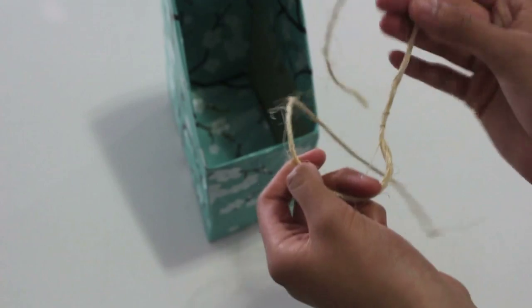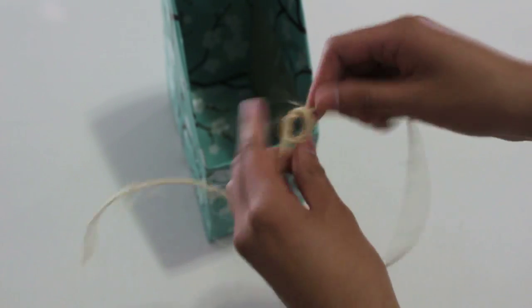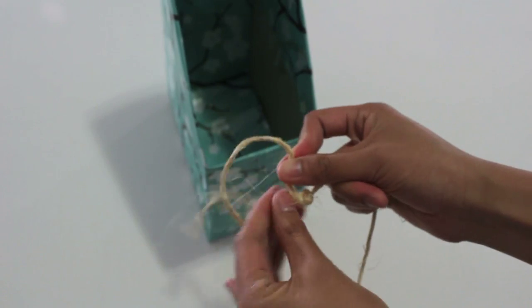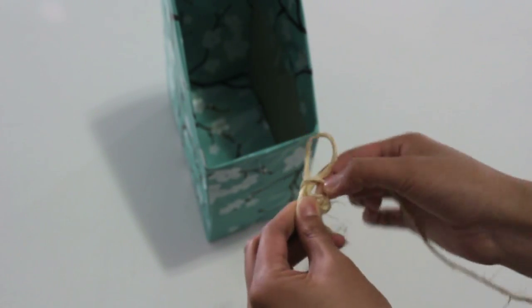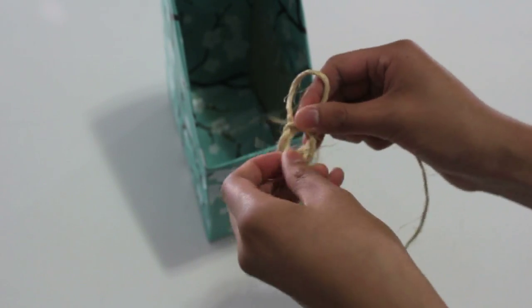Of course you can decorate this any way you'd like. But I am just going to add a little bow out of twine by tying it into a knot, and then making a loop with one strand and wrapping that with a second strand and pushing it through a hole in the knot to create another loop.